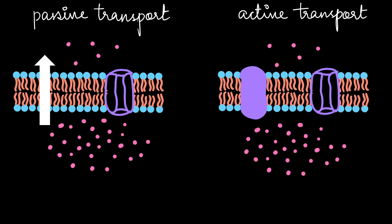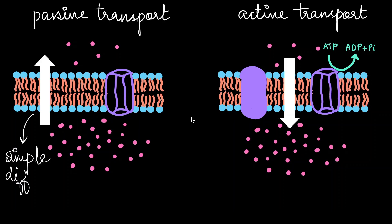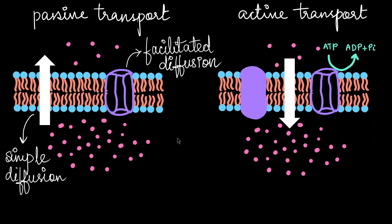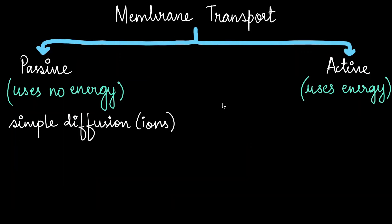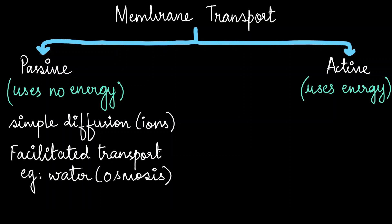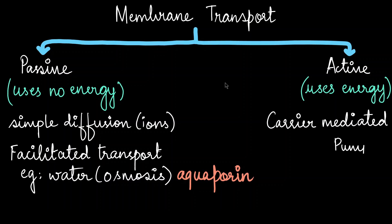In active transport, molecules move from a region of lower concentration to higher concentration — against the concentration gradient — and this requires energy in the form of ATP. Neutral solute molecules passively move through the cell membrane. If molecules need the help of a carrier protein, this is called facilitated diffusion. Active transport can happen via a carrier protein or a channel protein. Simple diffusion refers to passive movement of ions across the membrane. If it is through a carrier, it is facilitated transport. Water requires a special channel protein called aquaporin and therefore also comes under facilitated transport.